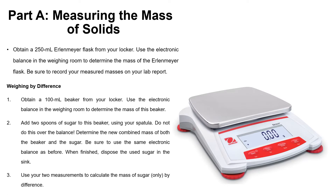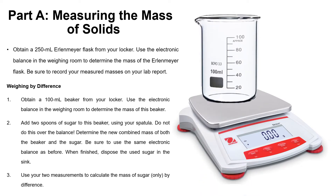Next we're going to weigh by difference. Obtain a 100 ml beaker from your locker and use the electronic balance to determine its mass. Add two spoons of sugar to the beaker using a spatula. Record the mass of the empty beaker, then determine the new combined mass of the beaker plus sugar by weighing them again. Be sure to use the same electronic balance as before. When finished, dispose of the used sugar in the sink.